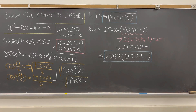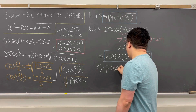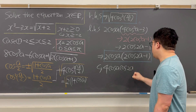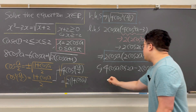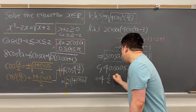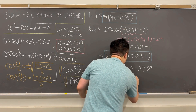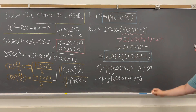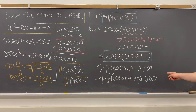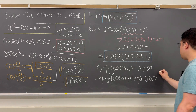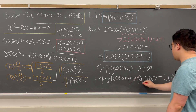Rewriting further, the left-hand side becomes 4 cosine A cosine 2A minus 2 cosine A. Using the product-to-sum identity, 4 cosine A cosine 2A equals 4 times one-half times (cosine 3A plus cosine A), which is 2 cosine 3A plus 2 cosine A. Subtracting 2 cosine A, the 2 cosine A terms cancel, and the final expression for the left-hand side is simply 2 cosine 3A.